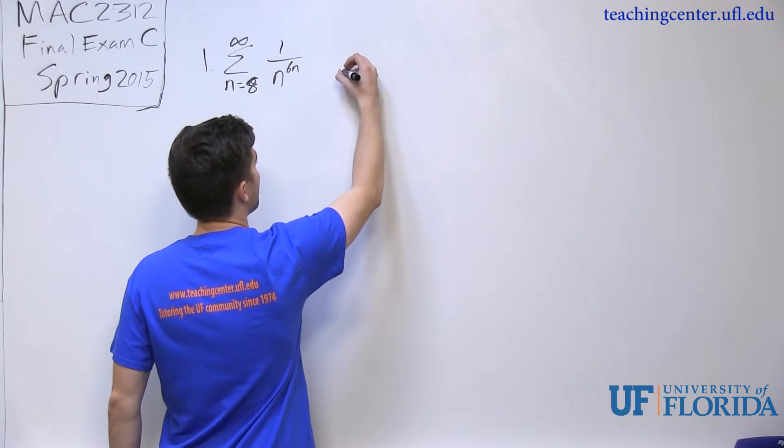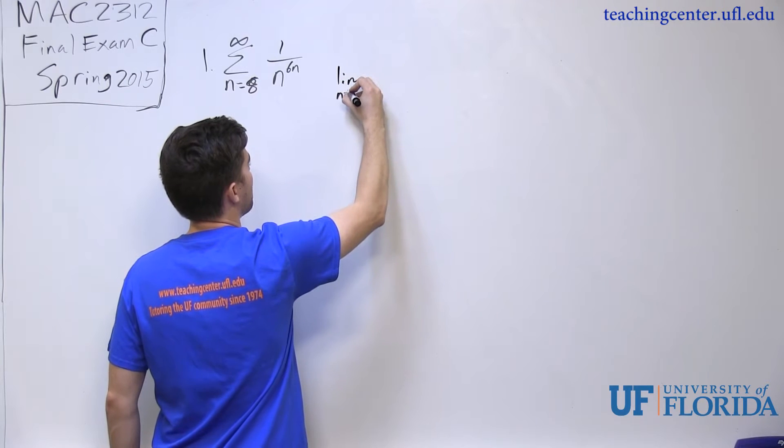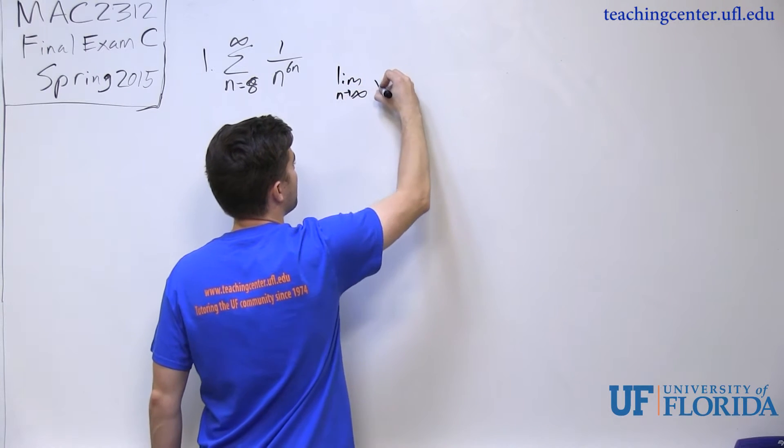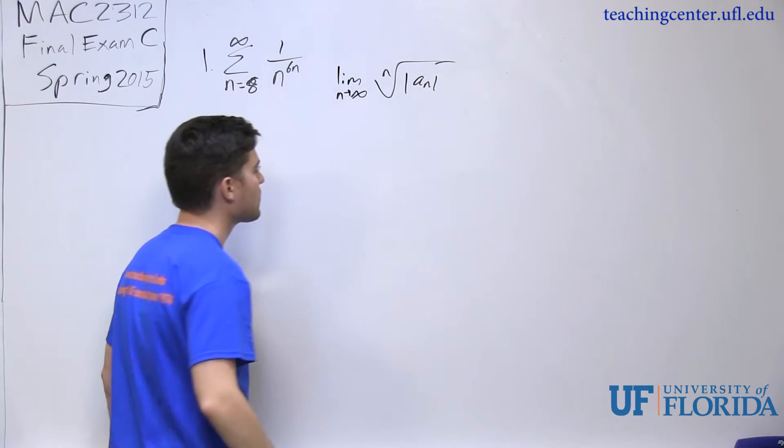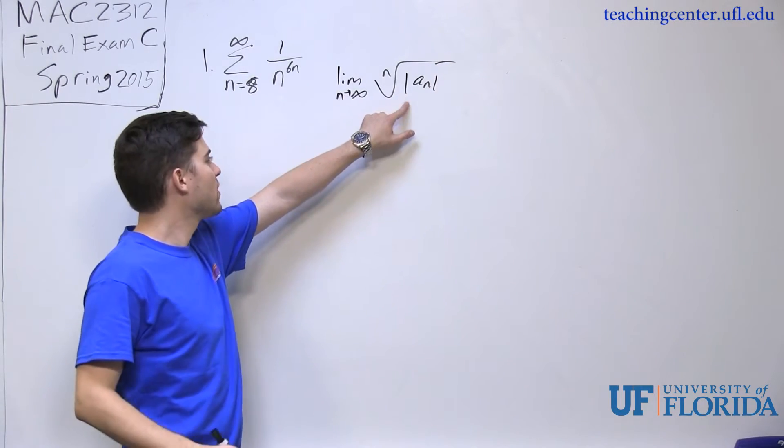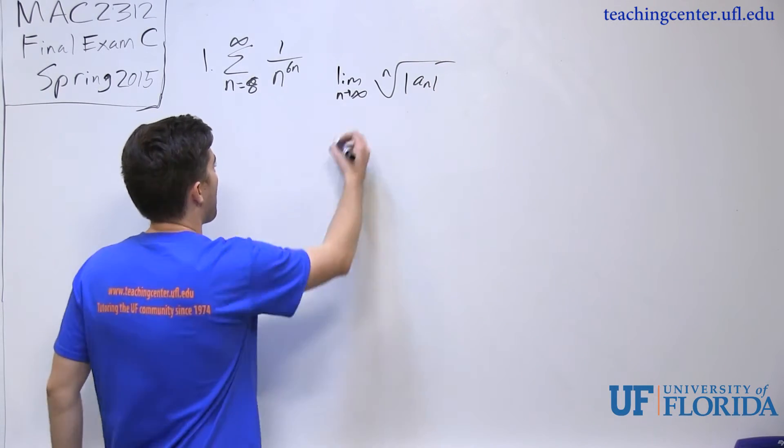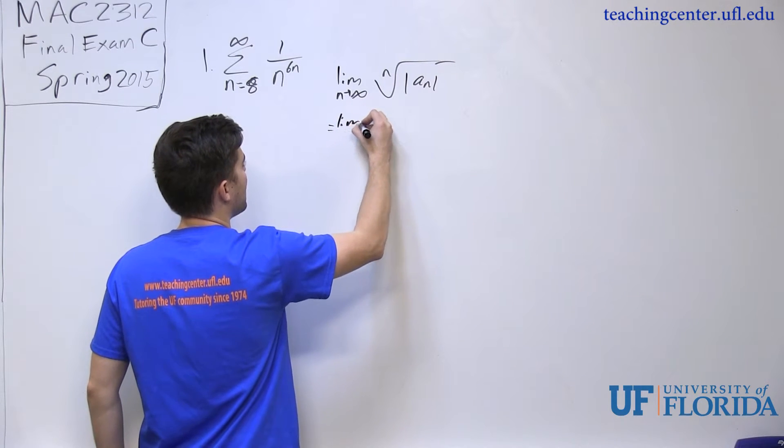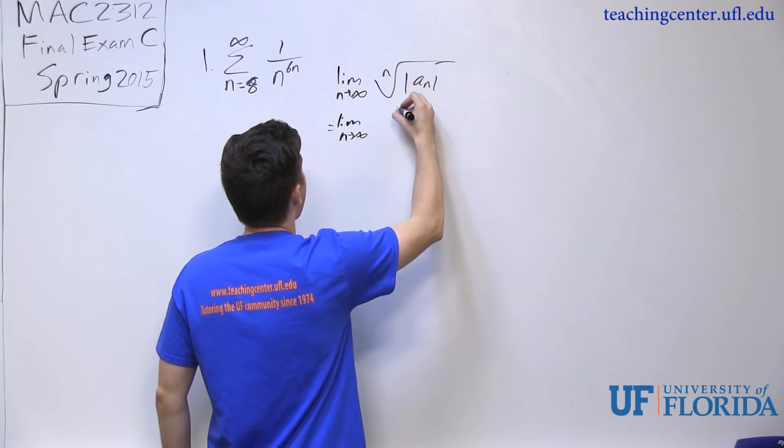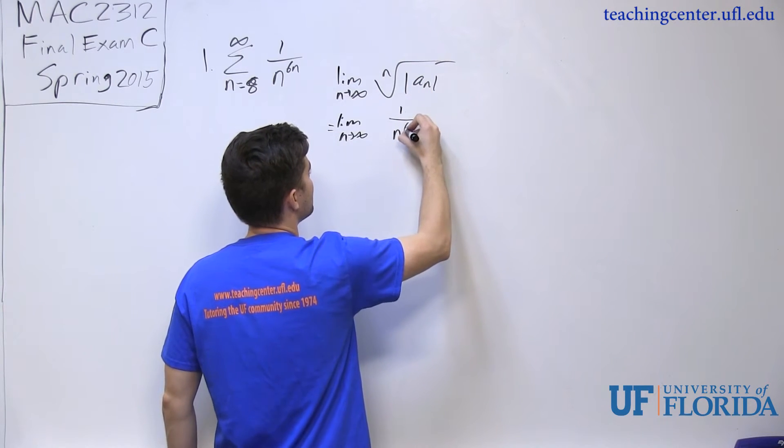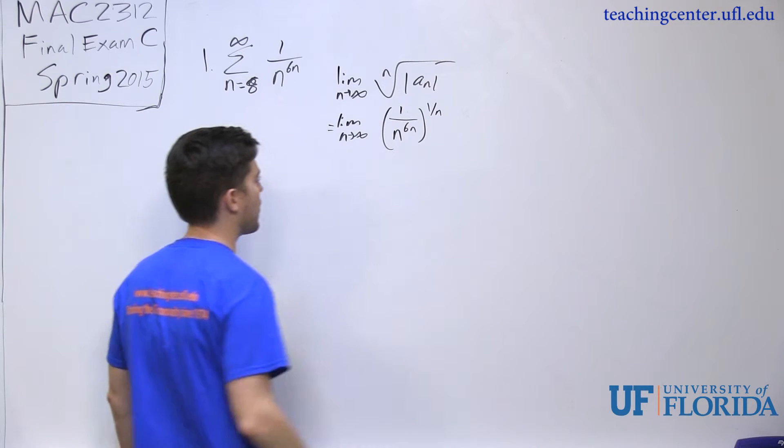So if I apply root test, remember, root test is just the limit as n approaches infinity of the nth root of the absolute value of a sub n. So when I take the nth root of the absolute value of a sub n, I end up getting the limit as n approaches infinity, and I have 1 over n to the 6n, all to a 1 over n power.